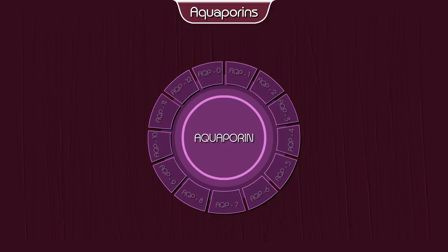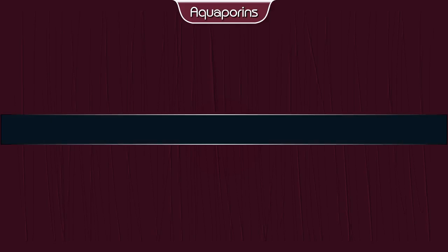Aquaporin 11 — permeability: water; distribution: kidney and brain. Aquaporin 12 — permeability: water; distribution: pancreas.